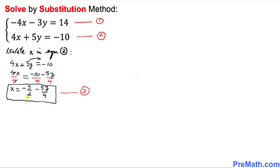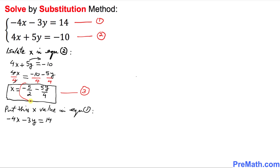In the next step, we are going to substitute this x value into equation number one. Equation number one is: negative 4x minus 3y equals 14. Wherever we see x, we replace it with negative 5 over 2 minus 5y over 4. So it becomes negative 4 times the quantity negative 5 over 2 minus 5y over 4, then minus 3y equals 14.